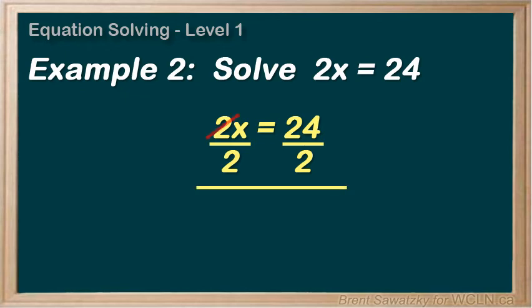On the left, 2x divided by 2 equals x. So we have the x by itself, as planned. And on the right, we have 24 divided by 2 equals 12, or x = 12. We've successfully isolated the variable.